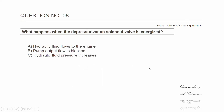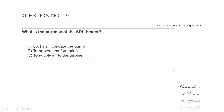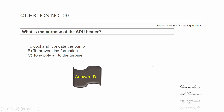Question number eight: what happens when the depressurization solenoid valve is energized? The answer is B — the pump output flow is blocked. Question number nine: what is the purpose of the ADP heater? The answer is B — to prevent ice formation.